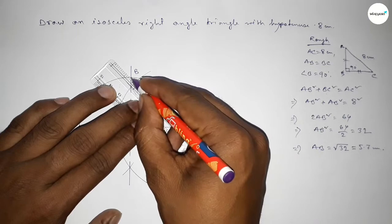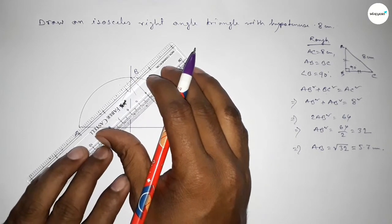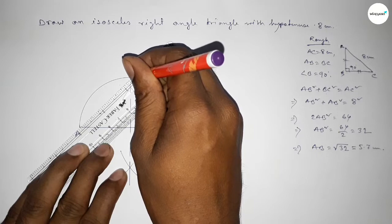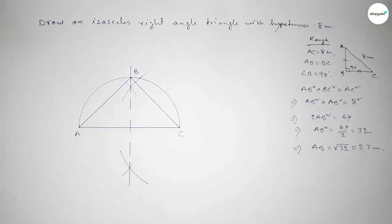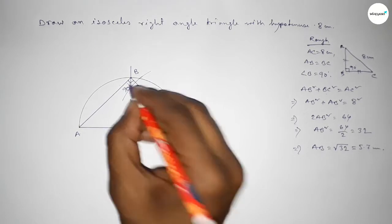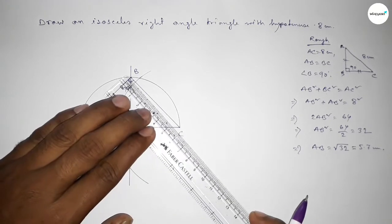Next, joining A and B to get triangle ABC. The angle in a semicircle is always 90 degrees. Now checking whether sides BC and AB are equal or not.